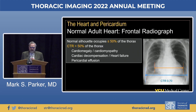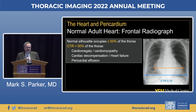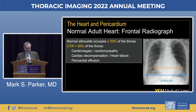Most of our hospitalized patients, especially those from ICUs, are going to have abnormally large cardiothoracic ratios—greater than 50%. What causes a big cardiothoracic ratio? Cardiomegaly, cardiomyopathies, cardiac decompensation, heart failure, and of course pericardial effusions.